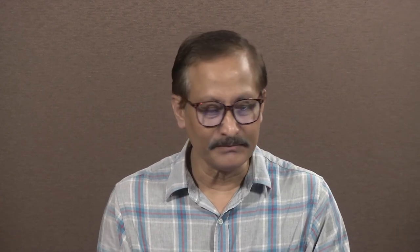If you do not have web connectivity, you can download the standalone program and use it as such. There are certain important strategies adopted for single guide RNA design. The two main criteria for CRISPR-Cas genome editing are efficiency and specificity. Efficiency measures how well a single guide RNA targets a specific sequence and guides a Cas enzyme to edit the targeted sequences, and is usually expressed as a percentage of cells which are edited.